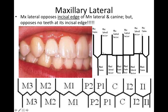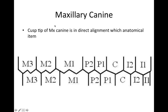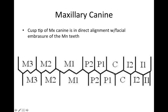The picket fence doesn't really give you a good front view of the teeth, so this picture can actually help to answer a couple of questions — maybe draw that one out too. For the maxillary canine: the cusp tip of the maxillary canine is in direct alignment with which anatomical item? The answer is it's going to be in alignment with the facial embrasure of the mandibular teeth.